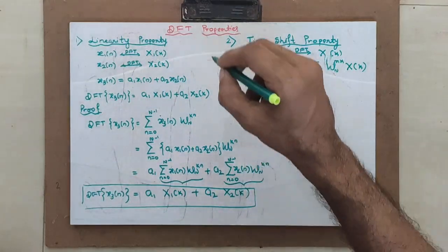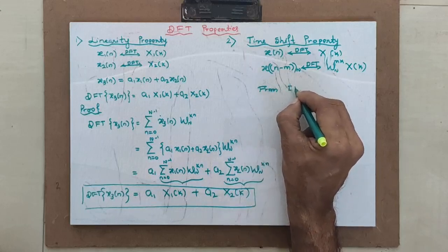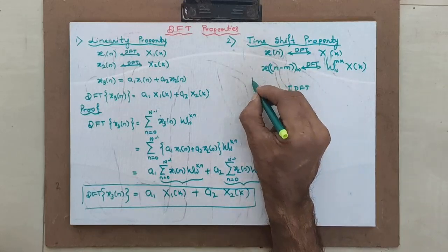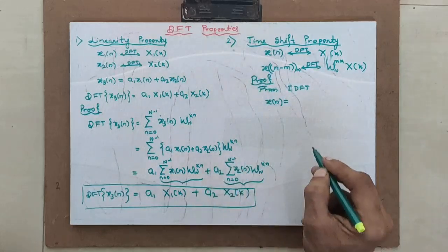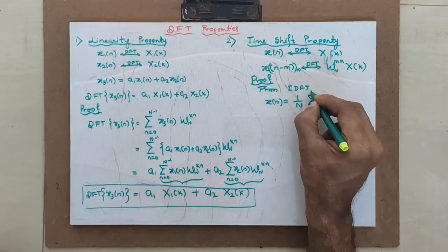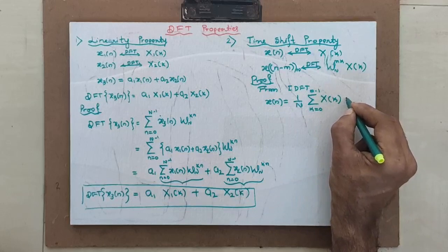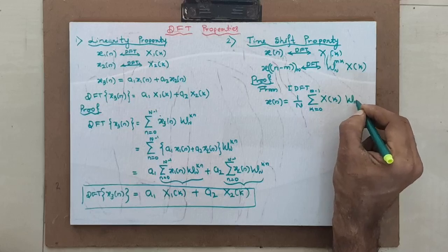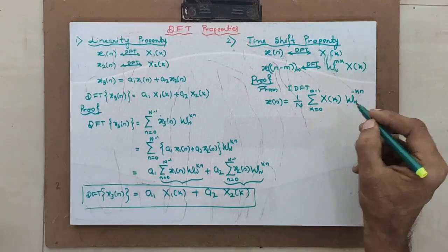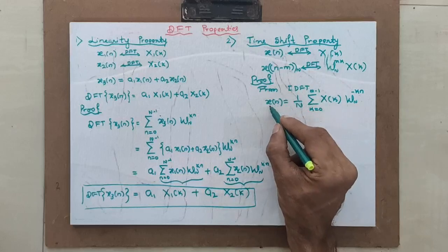Let us consider the IDFT formula to prove the time shift property. From IDFT, x(n) is given by (1/N) times summation from k=0 to N-1 of x(k)·W_N raised to minus kn. This is the IDFT formula — not the DFT formula. IDFT means finding x(n) when you are given x(k).